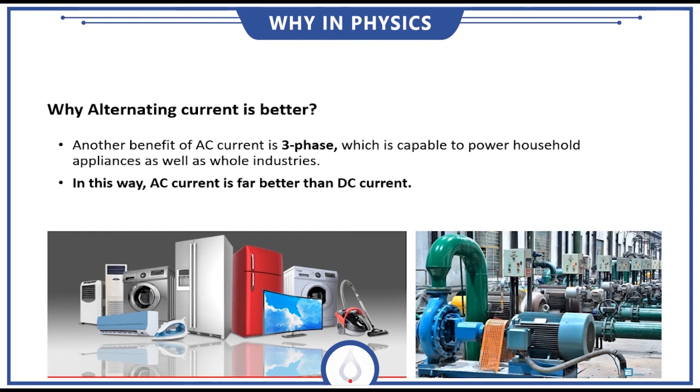Another thing which makes AC current more preferable than DC is three-phase. Three-phase was capable of all the versatility of the electricity needs of daily life, from our daily life use to the industrial use. All of the industries are actually working on this three-phase technology, and in this way AC current has become far better than DC current in distribution systems, in industries, and as well in the home also.